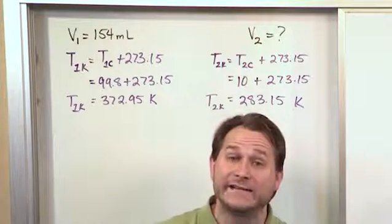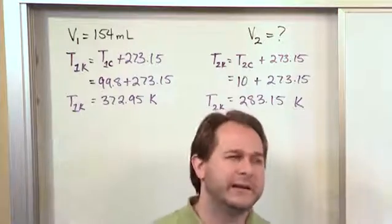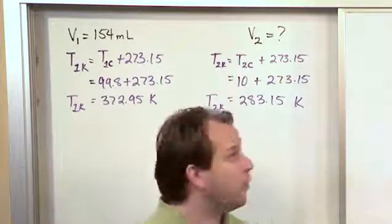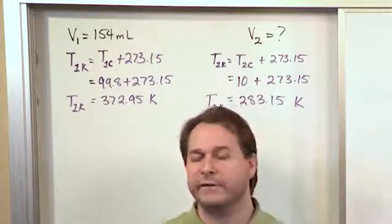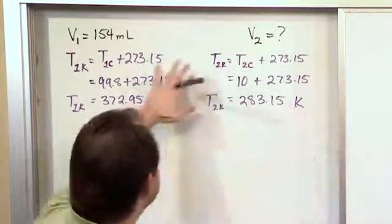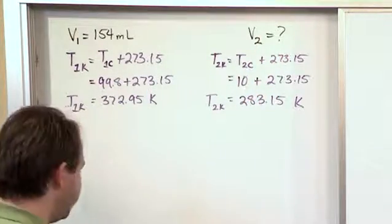That way, if you make a mistake somewhere, your teacher can at least see that you knew how to convert to Kelvin. You at least knew that part, or maybe you made a mistake. What if you make a simple mistake converting to Kelvin? At least the teacher can then see what you did and give you maybe some partial credit. If you don't write any of this down, if you just start adding things and putting the Kelvin temperatures down, then nobody knows what you were doing.